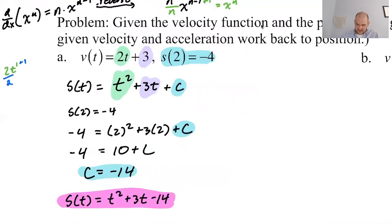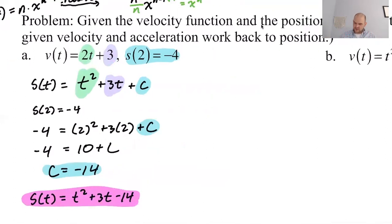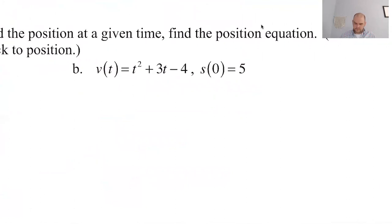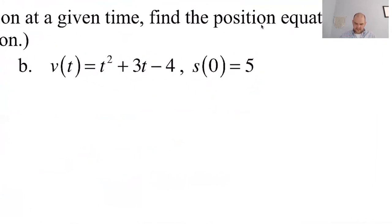So this function, for this function, s of 2 is negative 4. You get 4 plus 6 is 10 minus 14 is negative 4. And then also the derivative of this is 2t plus 3. That's our original position function. We did it. We worked backwards. Let's see if we can do it again.